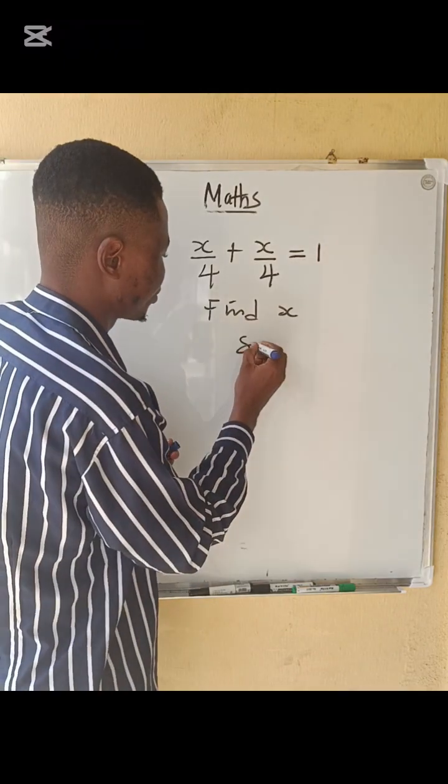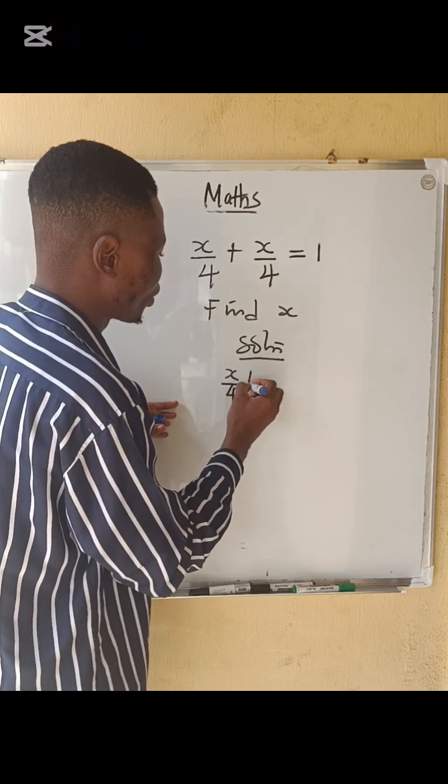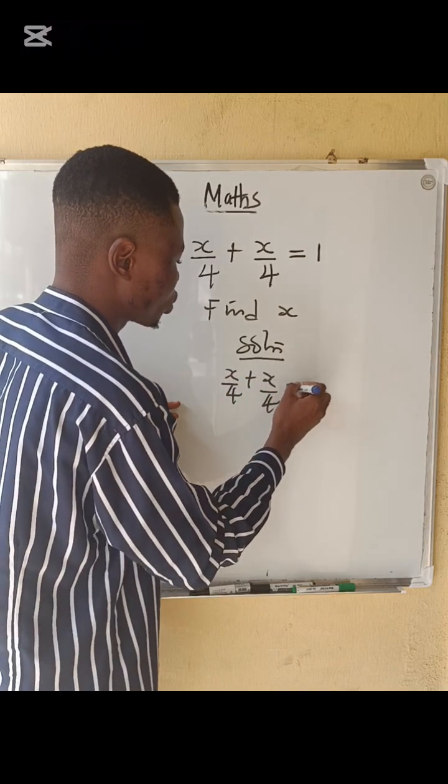Solution. This is x over 4 plus x over 4 equals to 1.